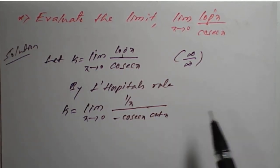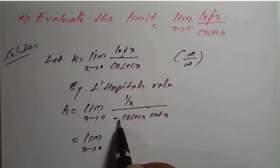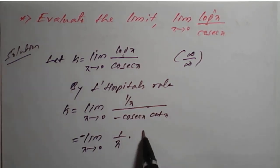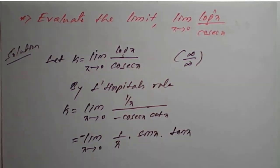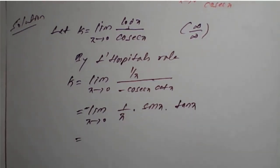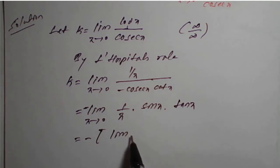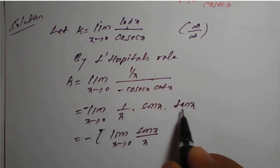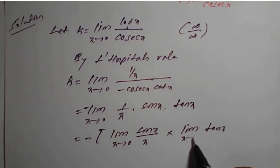Keeping that in mind, we apply L'Hôpital's rule: differentiate log x to get 1 upon x, and differentiate cosecant x to get minus cosecant x into cot x. Now rearranging, this becomes the limit as x tends to 0 of 1 upon x, multiplied by sin x, multiplied by 1 upon cot x, which we can write as minus times the limit of sin x divided by x, multiplied by the limit of tan x, as x tends to 0.